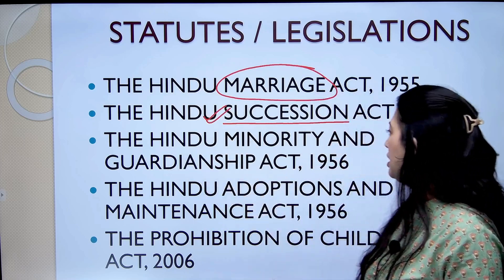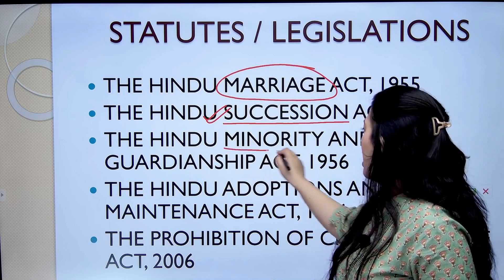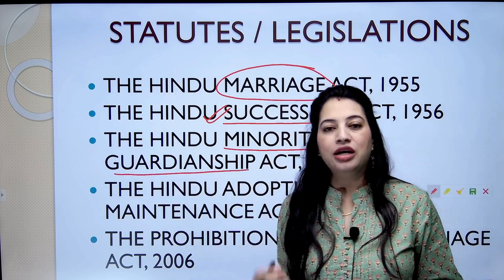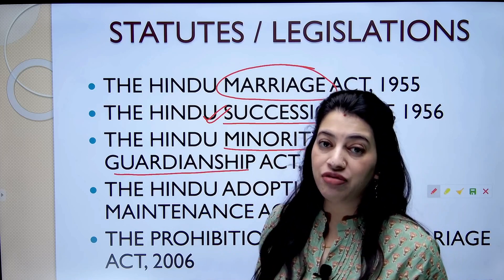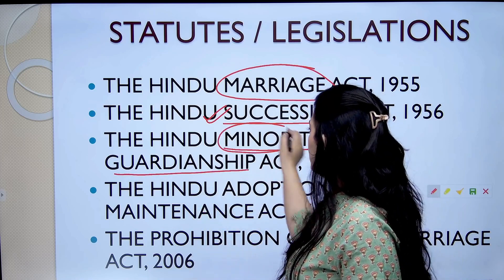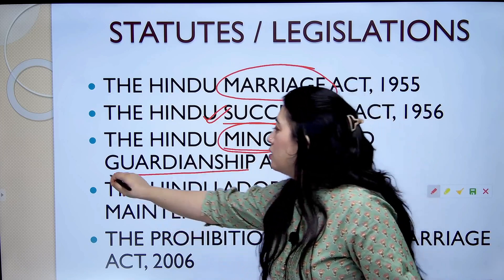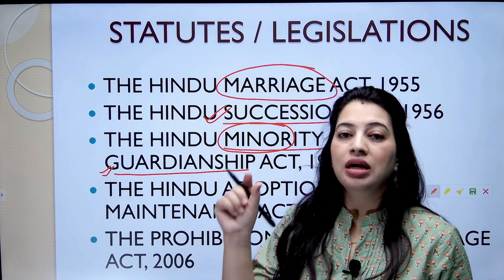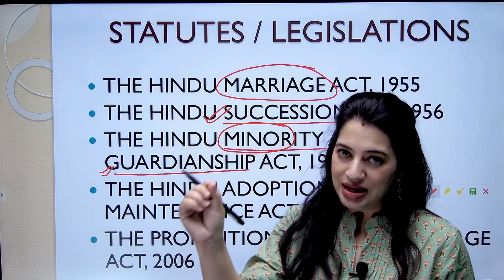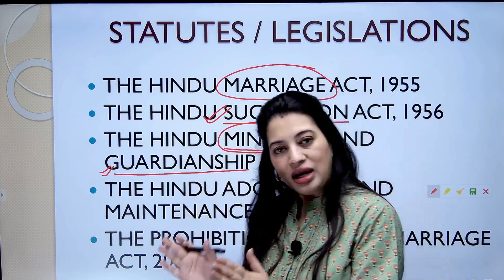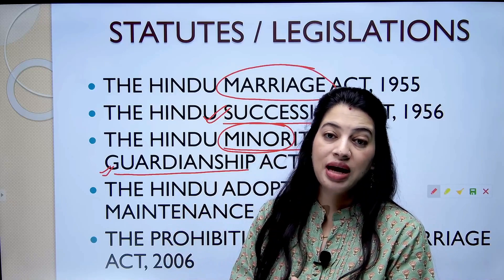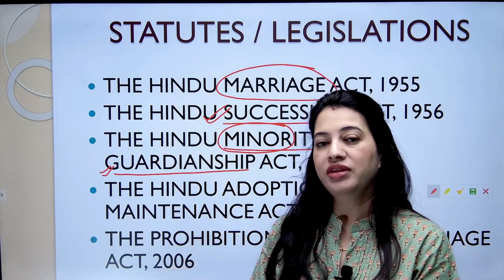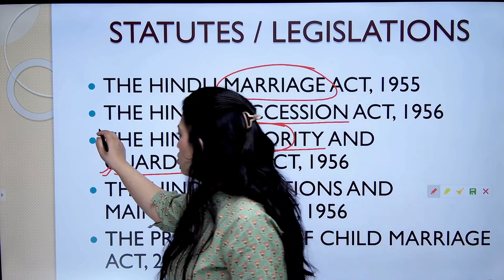Next is the Hindu Minority and Guardianship Act. It should be clear from the name itself. It deals with the concept of minors and their guardianship. Yaani, if a Hindu person in India is a minor, unke kya rights hain, duties hain, who is going to be their guardian, who is going to take care of them — yeh saare jo concepts hain, we cover them under the Hindu Minority and Guardianship Act of 1956.